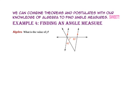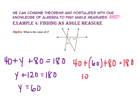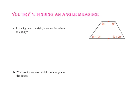In Example 4, we are going to find an angle measure by combining our theorems and postulates with algebra. Let's find the value of y. Since these two lines are parallel, this angle and the 80-degree angle are supplementary because they are same side interior angles. The angle on the left has a measure of 40 plus y. Adding that to the 80-degree angle gives 180. Combining like terms, y plus 120 equals 180. By the Subtraction Property of Equality, y equals 60. We can check by substituting: 40 plus 60 is 100, and 100 plus 80 equals 180, confirming y is correct.